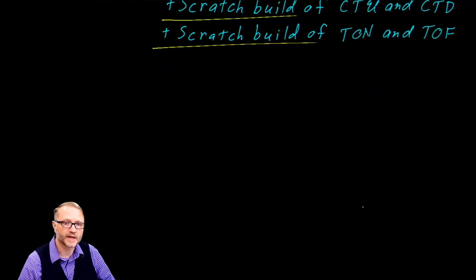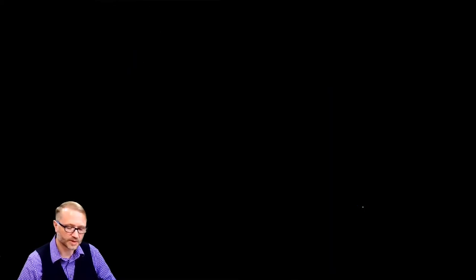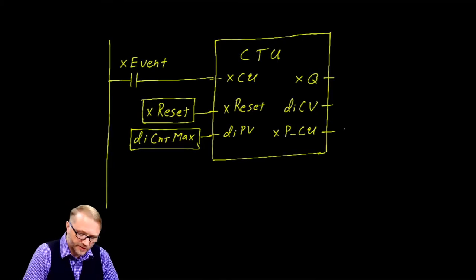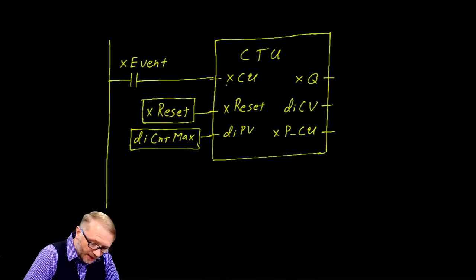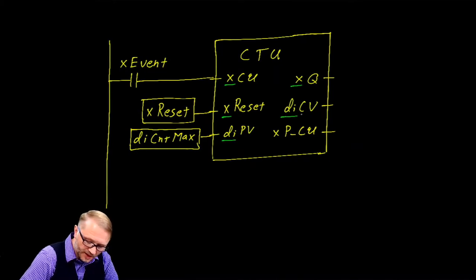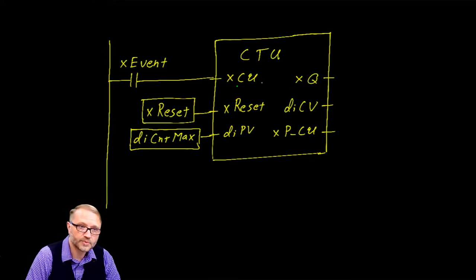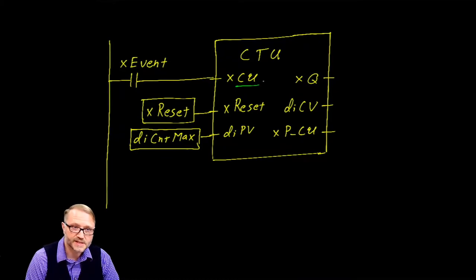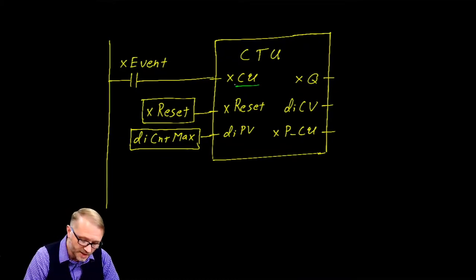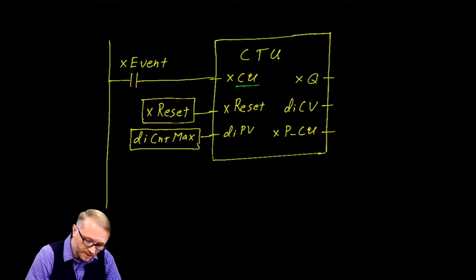We'll start by looking at the count up block. This block should look familiar. However, I've taken the liberty of adding the prefixes for our data types before each of the inputs and outputs. Our inputs are described as count up — this is an edge sensitive input. Every rising edge, the counter will be incremented.